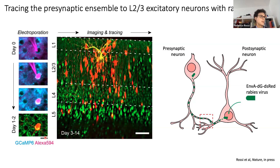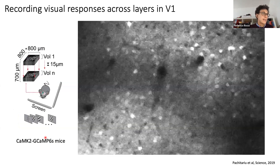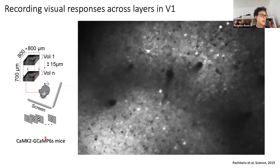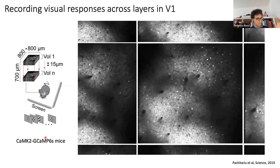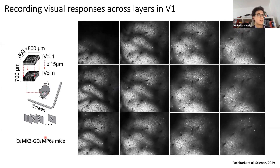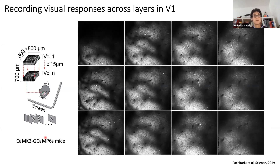After the tracing, the presynaptic neurons appear also labeled by DS-RED. To classify these presynaptic neurons as excitatory or inhibitory, I used a mouse line that expresses the far-red indicator M-Cherry in inhibitory neurons. Then to record activity from these presynaptic ensembles, which are spread over a large volume, I used volumetric two-photon imaging, repeated serially to span a full volume from the surface to superficial layer five, while an awake mouse was passively presented with visual stimuli.